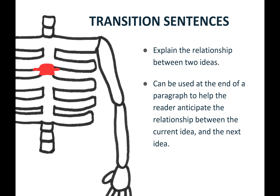Next, you can shade in the vertebra right underneath the one you just colored. Transition sentences explain the relationship between two ideas. They can be used at the end of a paragraph to help the reader anticipate the relationship between the current idea and the next idea. At first you might struggle to write sentences that aren't really formulaic or direct, but getting in the habit of being intentional about how you wrap up one paragraph and guide the reader into another is really important. So even starting with a formulaic transition sentence is better than not having one at all.